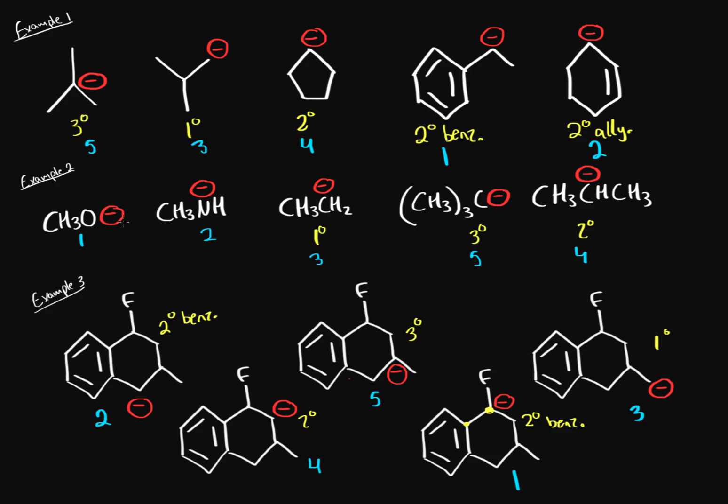Those are three different examples of how to rank carbanion stability. Just remember that carbanions are electron-rich, they want to withdraw that electron density away, and they don't want that negative charge. That's all there is to it.